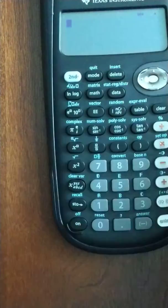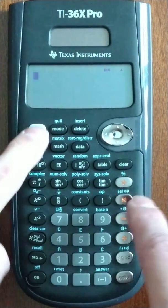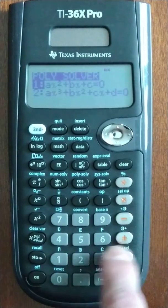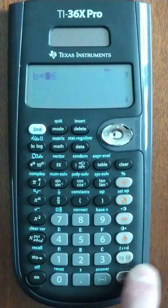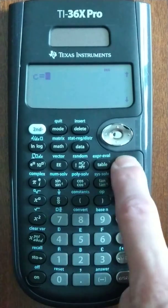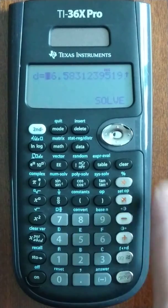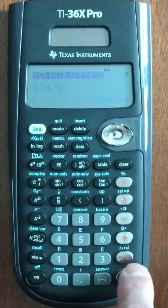Alright, let's look at the TI here, same problem. Shift, polysolve, we're going to pick 2 because that's a cubic. Put in our numbers: 1, I hit clear, 20 for x squared, clear, and 132 for x, clear, and 288 for our constant, solve.